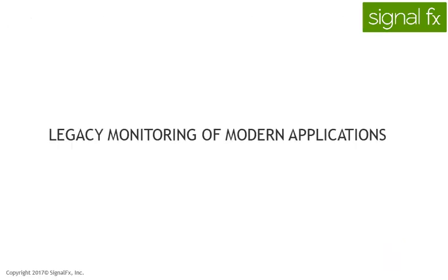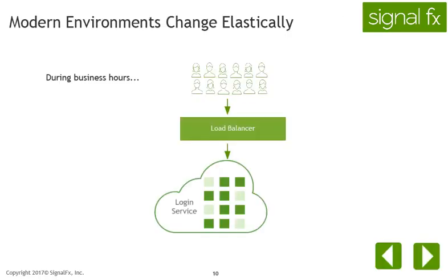What changed? Applications and systems have come a long way since the monoliths described earlier. Consider this example of a social media application. A user logs in, the login request is distributed by the load balancer, and the request is sent to a login service. This service can be comprised of multiple physical machines or containers. If one machine is down, the request is sent to a different one.